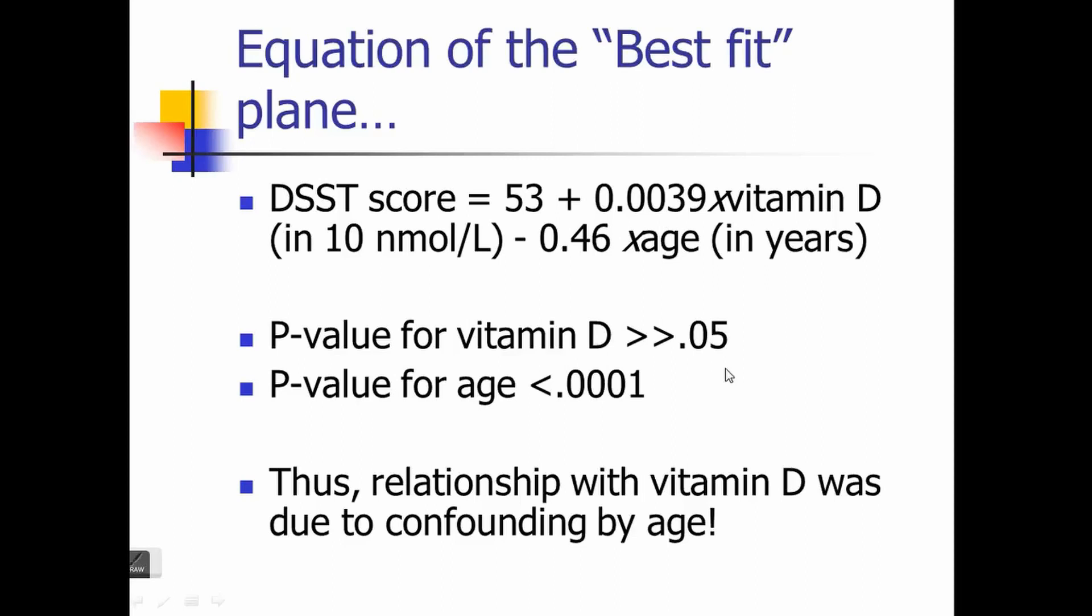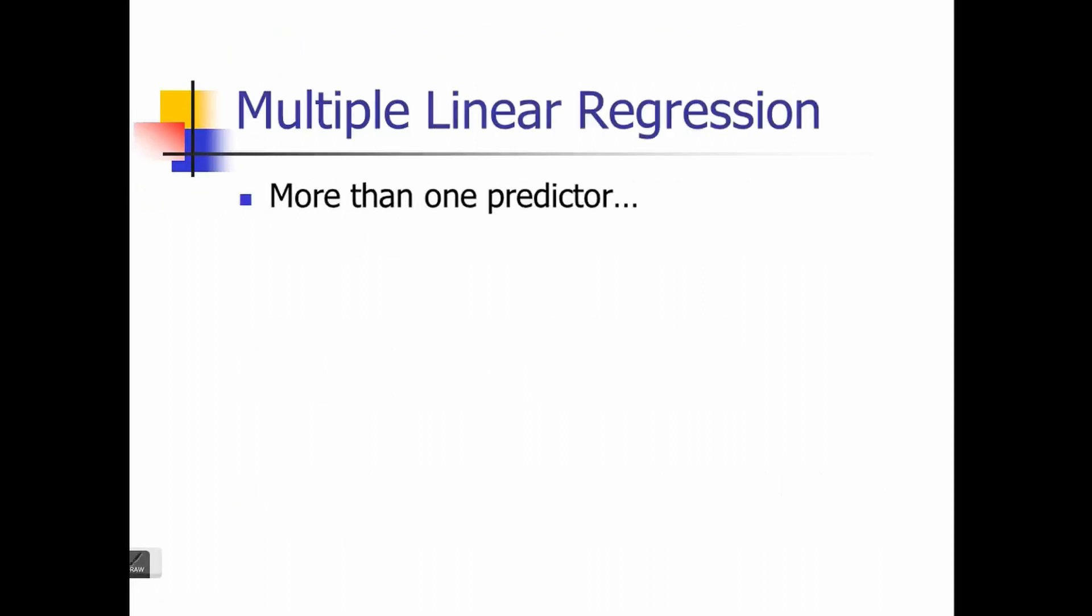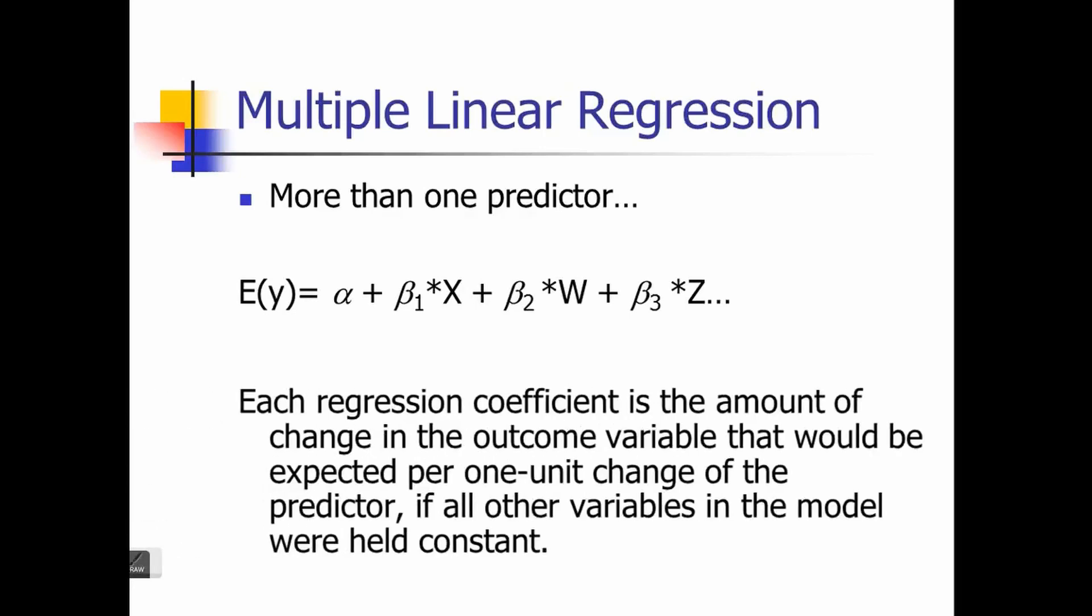Then you do your hypothesis testing to see if both coefficients, vitamin D and age, are significant. Only when they are significant with your hypothesis testing do you need to interpret them. Otherwise there's no point in interpreting these coefficients.